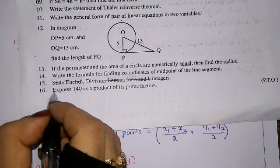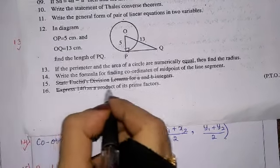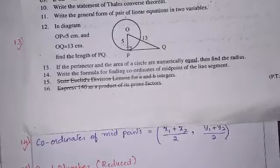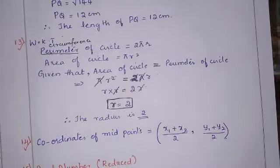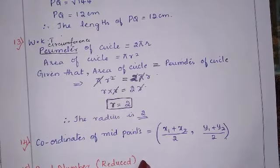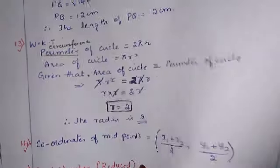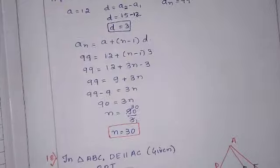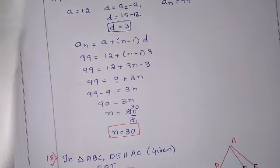Question number 15 is reduced — it is from the real numbers chapter. Question number 16 is also reduced. These two questions are from the reduced syllabus.